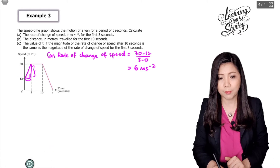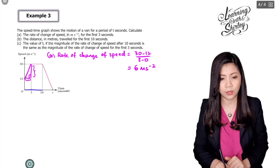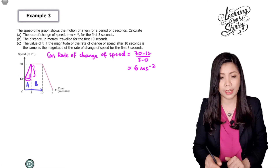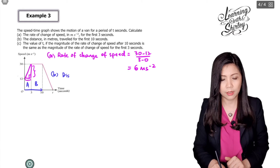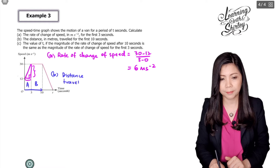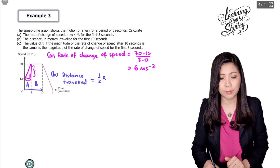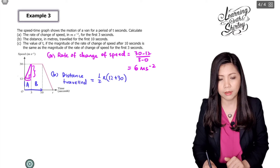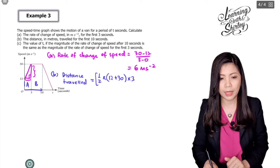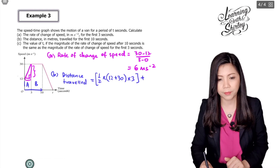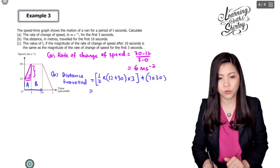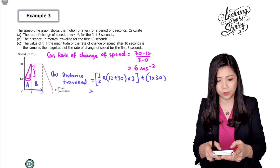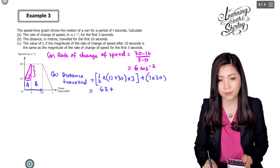For part B, find the distance in meters traveled for the first 10 seconds — from here to here — which means we find the area under the graph for both regions A and B: the trapezium plus the rectangle. Area equals half times (12 plus 30) times 3, plus 7 times 30. That gives 63 plus 210, so the answer is 273 meters.